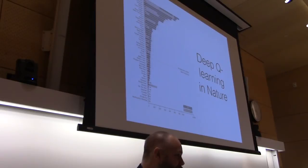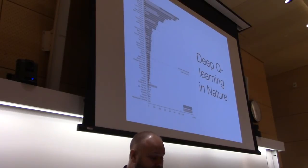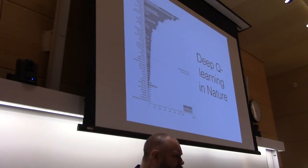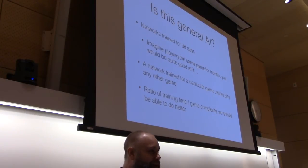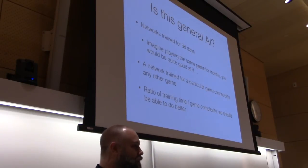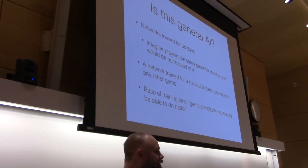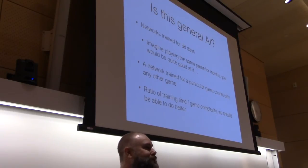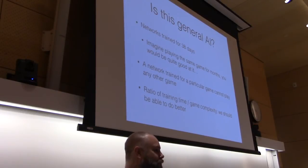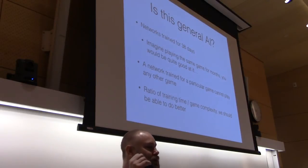However, is it general intelligence? Looking at training time, they train for about 38 days of gameplay per game — more than a month per game. If you played the same game eight hours a day for three months, you'd probably be good at it too. A network trained for a particular game cannot play any other game — there's no transfer learning. There are some subsequent papers with transfer learning results, but not very strong ones.